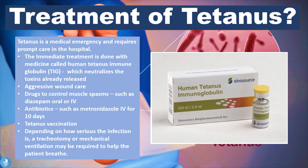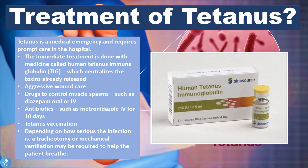Tetanus is a medical emergency requiring prompt hospital care. Immediate treatment is done with human tetanus immune globulin (TIG), which neutralizes the toxins already released by Clostridium tetani. Aggressive wound care, including deep cleaning and debridement, is also essential. Drugs to control muscle spasms such as diazepam can be given orally or intravenously. Antibiotics such as metronidazole can be given IV for 10 days to clear the bacterial infection. Patients will also be administered a tetanus vaccination.